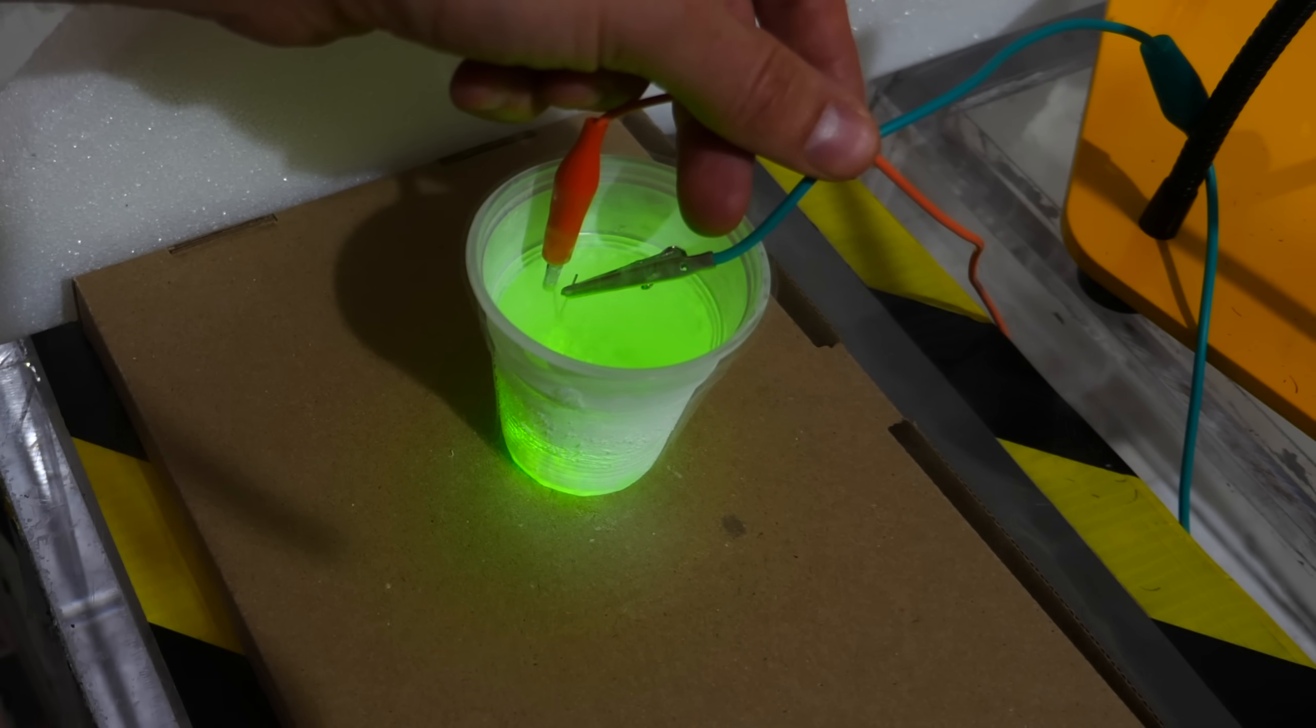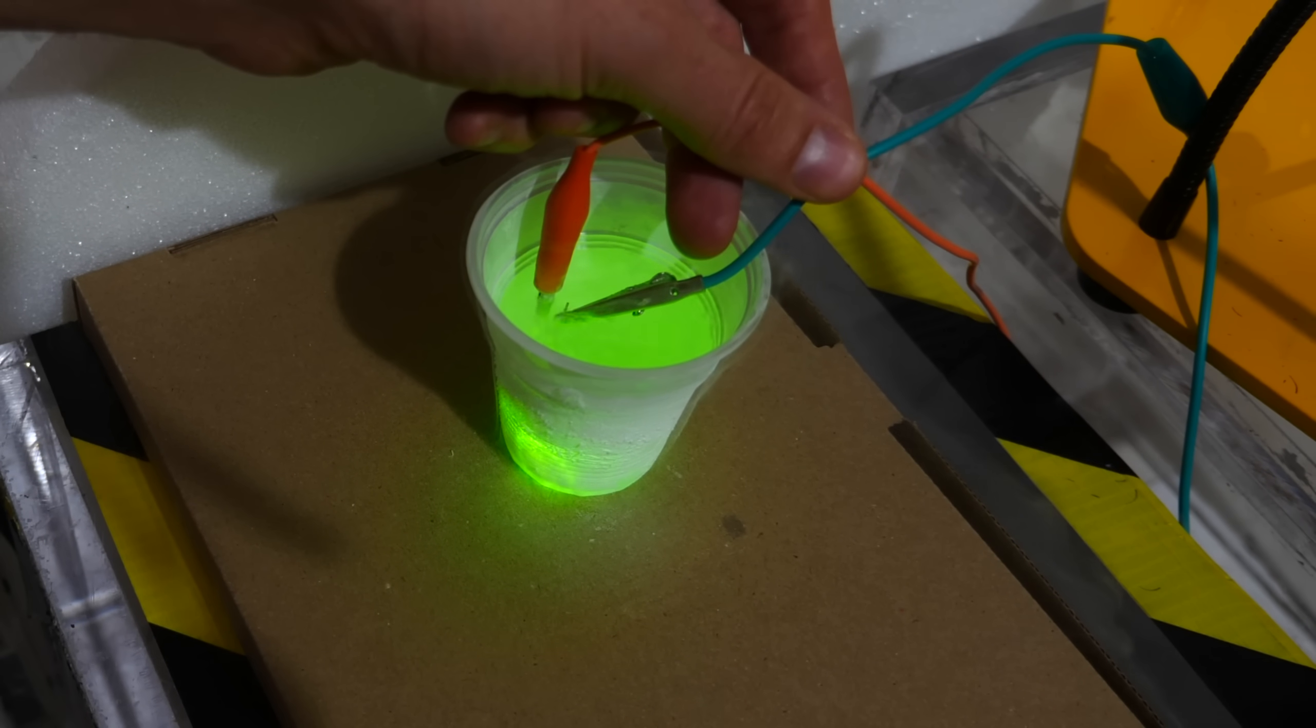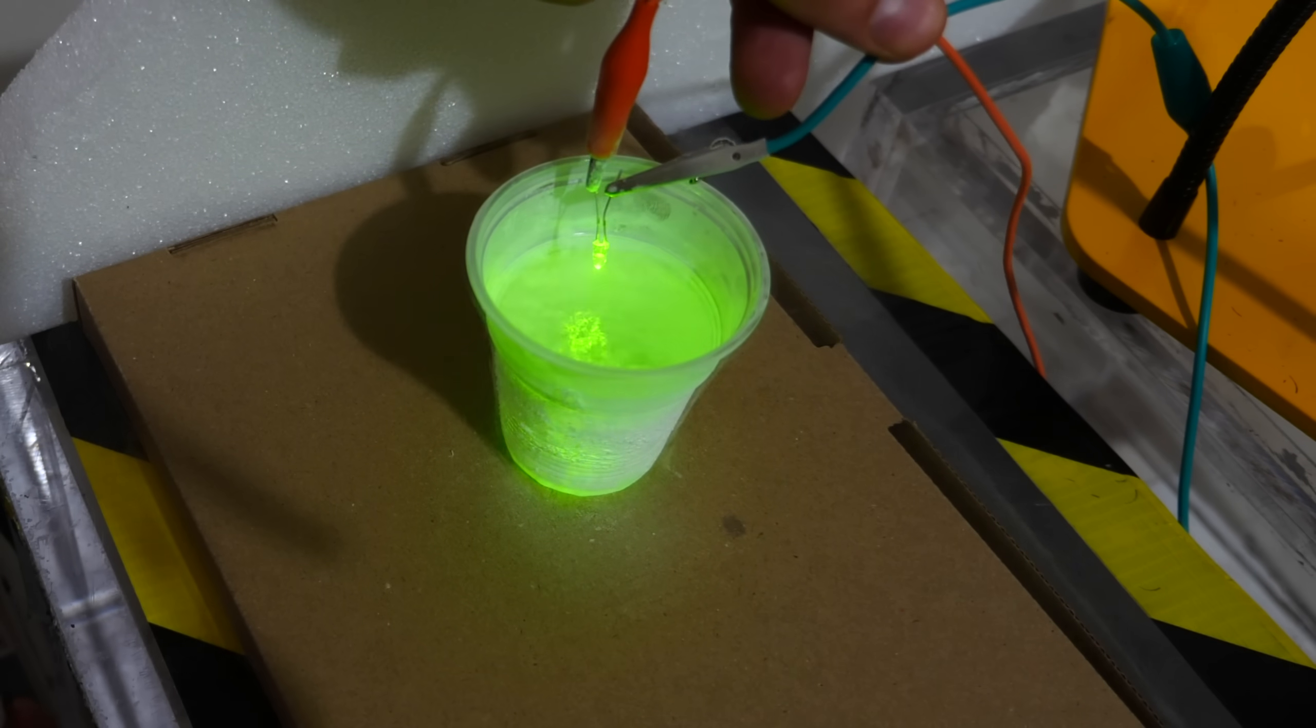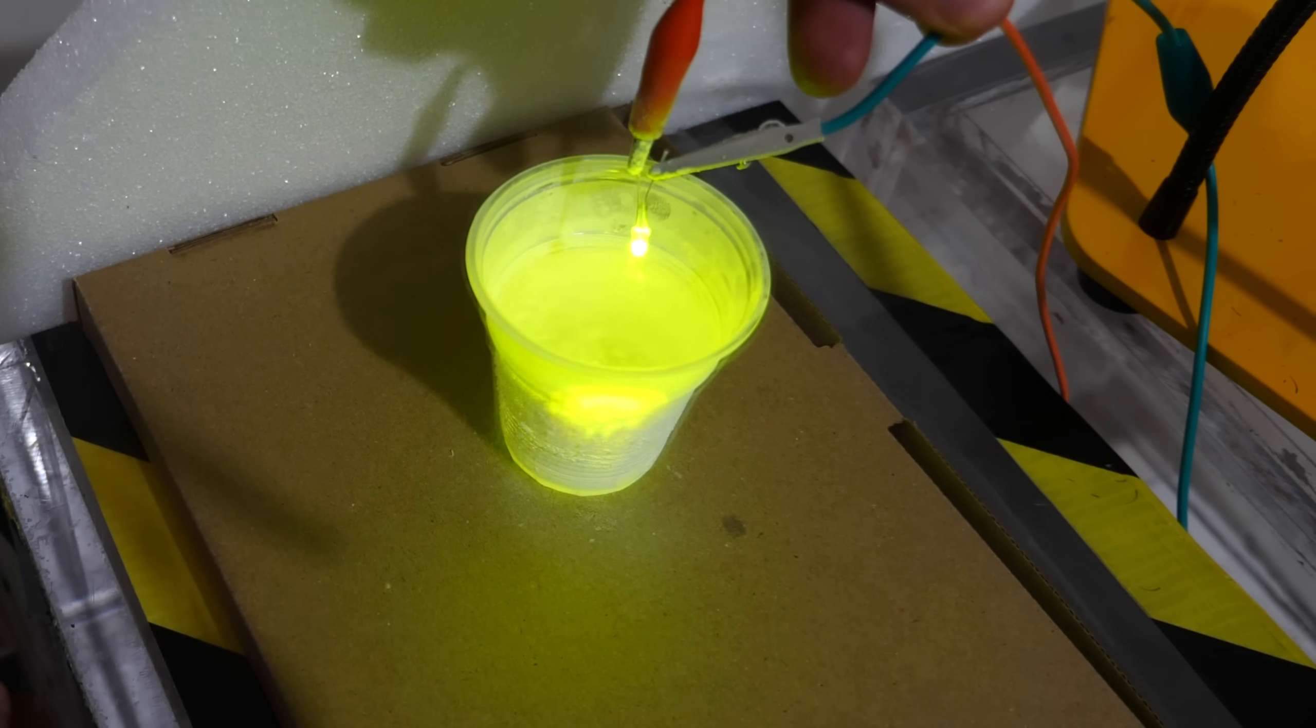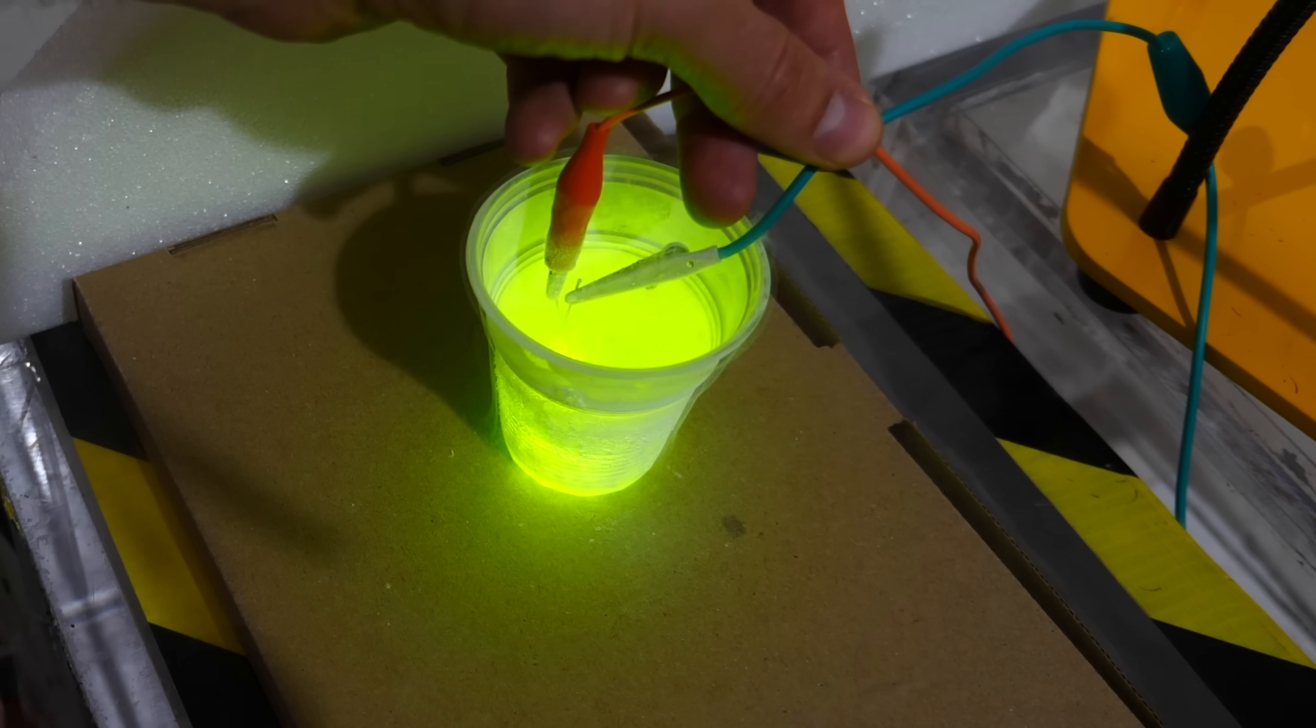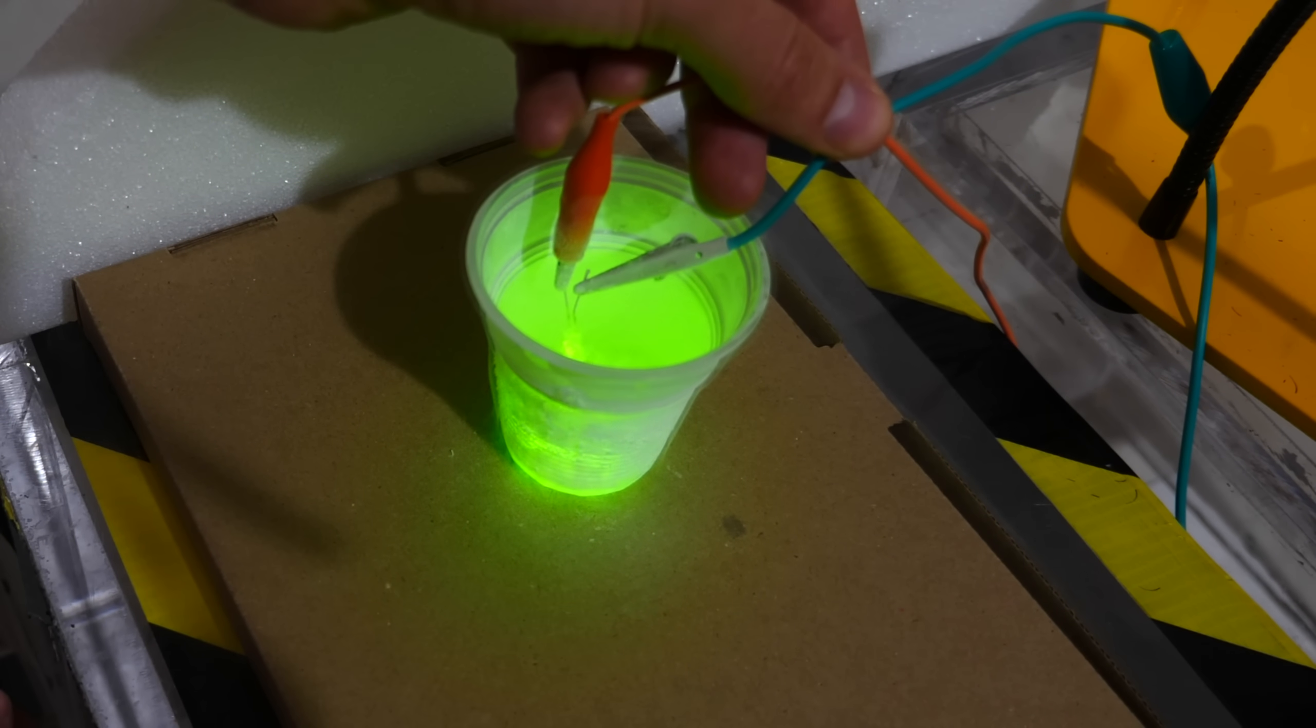Let's put it in the liquid nitrogen. Whoa. It's green. Look at that. And pull it back out. Okay, orange. Green. So this is a really cool effect. When you cool down an LED it changes the color of the LED.